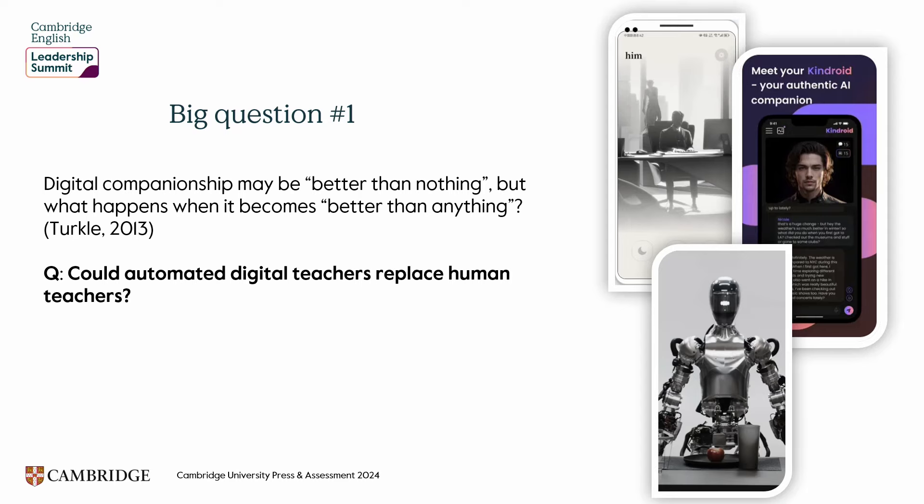The robotic moment is when we switch from interacting with human beings — that's okay — but we switch to preferring to interact with non-human beings. And that's an interesting thought, isn't it? Because if we think about ourselves as teachers and educational leaders, does that mean it's possible for our students to reach a robotic moment? Like Misaki's relationship with her boyfriend — why couldn't a student have an AI relationship with a teacher? The question really is: could automated digital teachers replace human teachers?